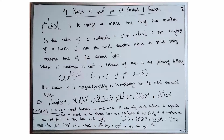In the Quran, there are four words that have the conditions of Idgham of Noon Sakina within one word, but we do not do Idgham in them. We read them with Idhar, just to avoid confusion in meaning. Those four words are: Dunya, Sunvanun, Finvanun, and Bunyanun. Although you can see the conditions of Idgham — Noon Sakina followed by Ya or Waw — you do not do Idgham; you read Noon Sakina clearly in all these places.